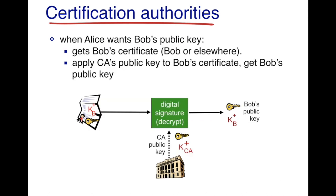So let's see what happens when Alice wants to get Bob's public key. She goes to the CA and gets Bob's certificate. The CA is a well-trusted organization and its public key is known to everyone, or can be readily obtained from the CA's website. Alice gets the CA's public key, applies it to Bob's certificate, and from there she can get Bob's public key — so she does not have to trust Bob to send her his public key directly.